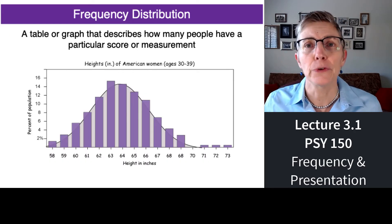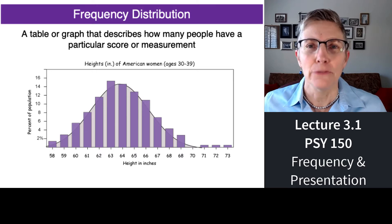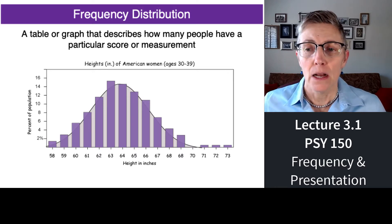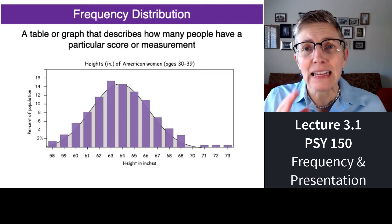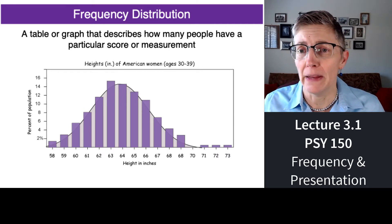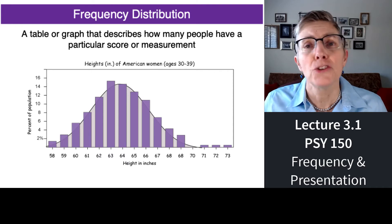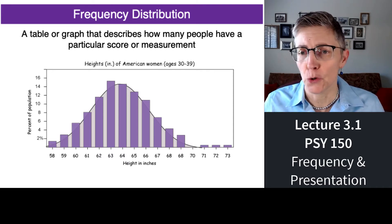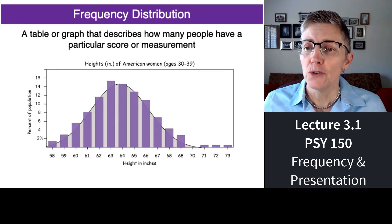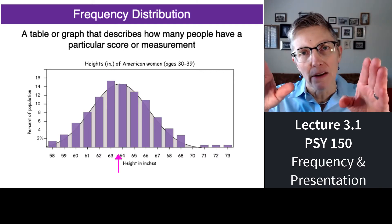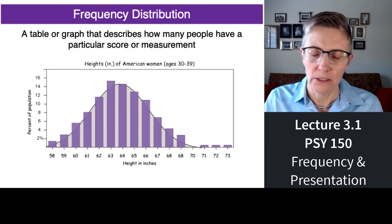Let's start with the frequency distribution because every student who's taken an exam hopefully has seen a frequency distribution after that exam. A frequency distribution is just a way of counting up the number of each type of response or measurement that you've made. It's a graph or table that describes simply how many people have a particular score. This is a frequency distribution of heights in inches, and you can see that the average height is about 64 inches, and then it drops off — fewer people have heights a little below or above that.